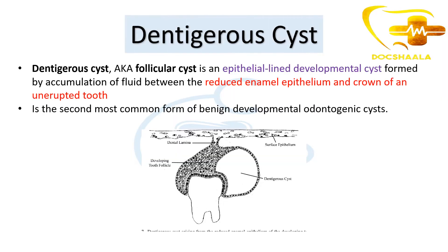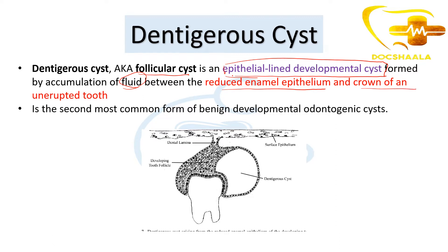A dentigerous cyst — most of you are familiar with it, but you have to remember a few important points by heart to answer any kind of question arising in exams. A dentigerous cyst is also known as follicular cyst. It is an epithelial-lined developmental cyst formed by accumulation of fluid between the reduced enamel epithelium and the crown of an unerupted tooth.